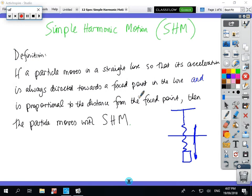Okay, hopefully a short topic on simple harmonic motion. So the definition: if a particle moves in a straight line so that its acceleration is always directed towards a fixed point in the line and is proportional to the distance from that fixed point, then the particle is said to move in simple harmonic motion.